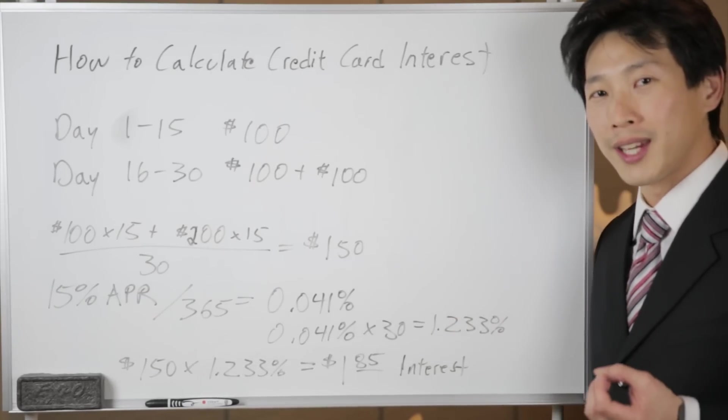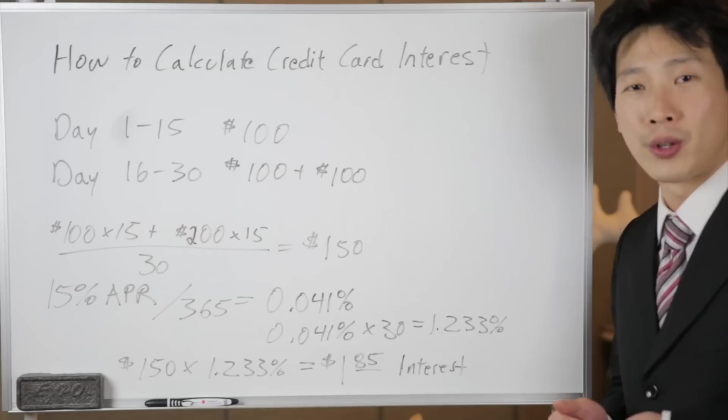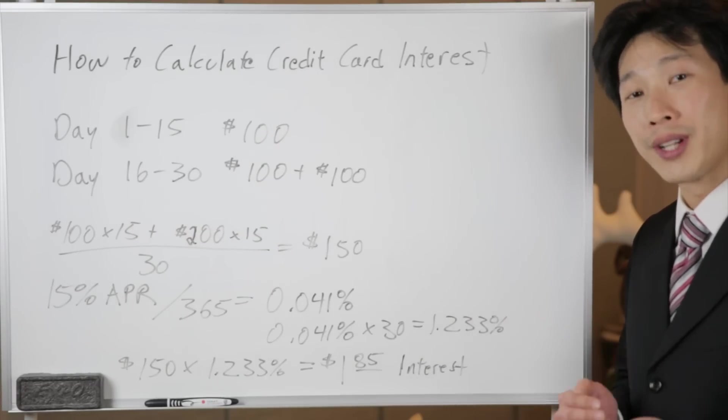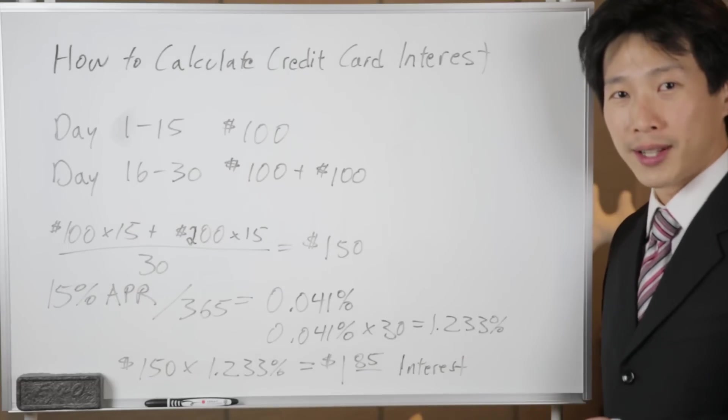In order to calculate the average daily balance, you can actually just go in your credit card and look at what your total balance is for that credit card for that day. And you do this for 30 days, add it all up, and you divide that by 30. That's your average daily balance.